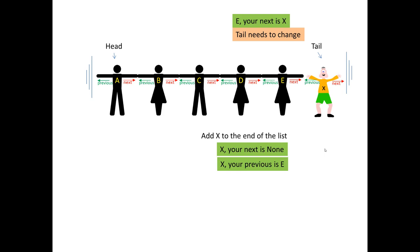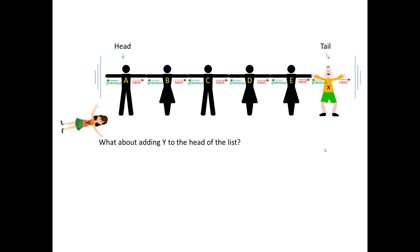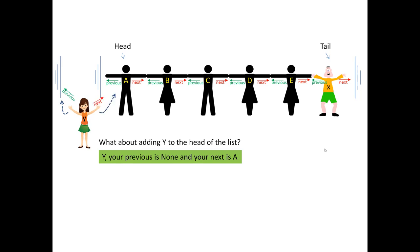I can do a similar operation if I wanted to add Y in the beginning. So I have to go to the head immediately and I add it there, regardless of the length of that list. So the first thing I have to do, I will bring up, I will create the node with the data Y. And I will tell, hey Y, your previous is none. And also your next is actually A. OK, that's done.